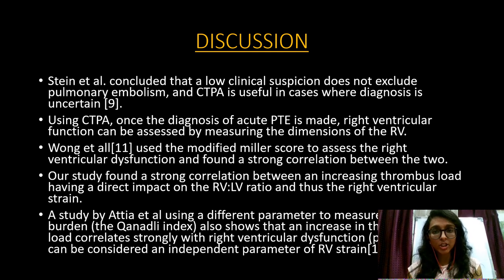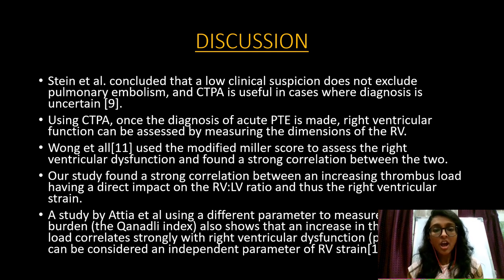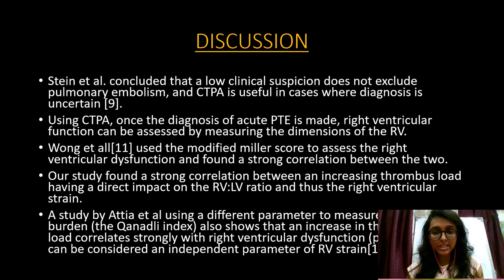Stein et al. concluded that CTPA is a useful modality to rule out pulmonary thromboembolism even when clinical suspicion is low. Wong et al. also used the modified Miller score and found a strong correlation with right ventricular dysfunction, consistent with our findings. In a study by Etesha et al., the Kennedy index was used to calculate thrombus load, and again a strong correlation with right ventricular dysfunction was found, concluding that right ventricular strain is an independent prognostic parameter for pulmonary thromboembolism.